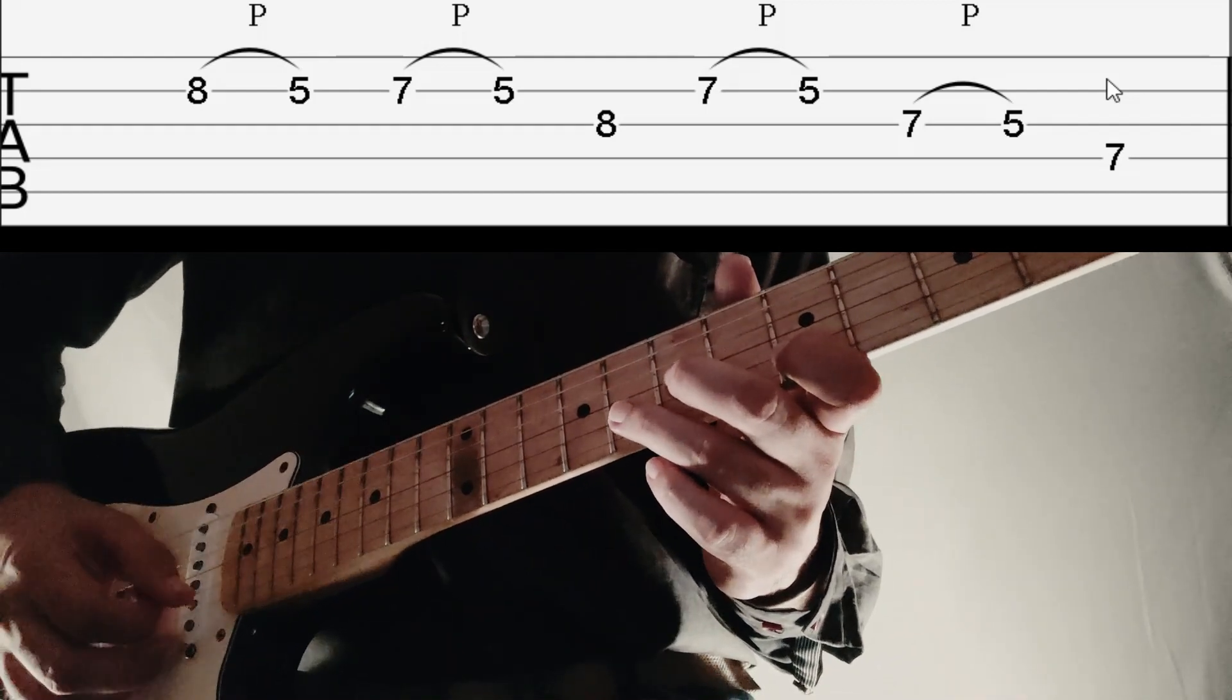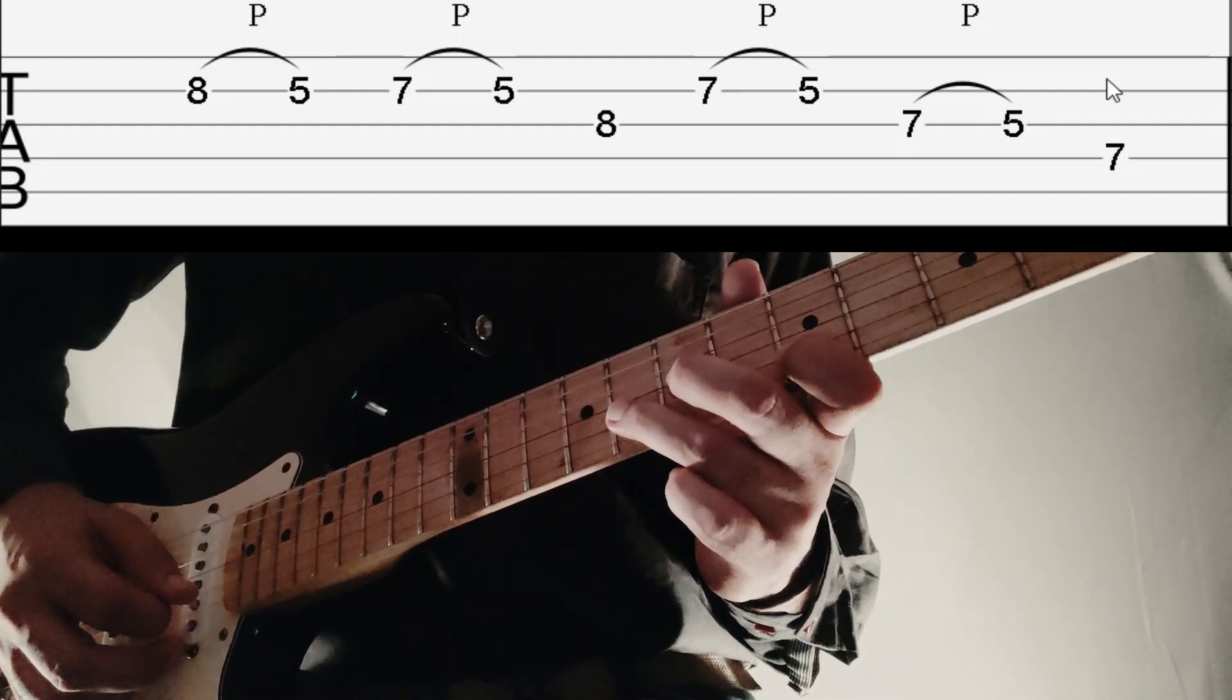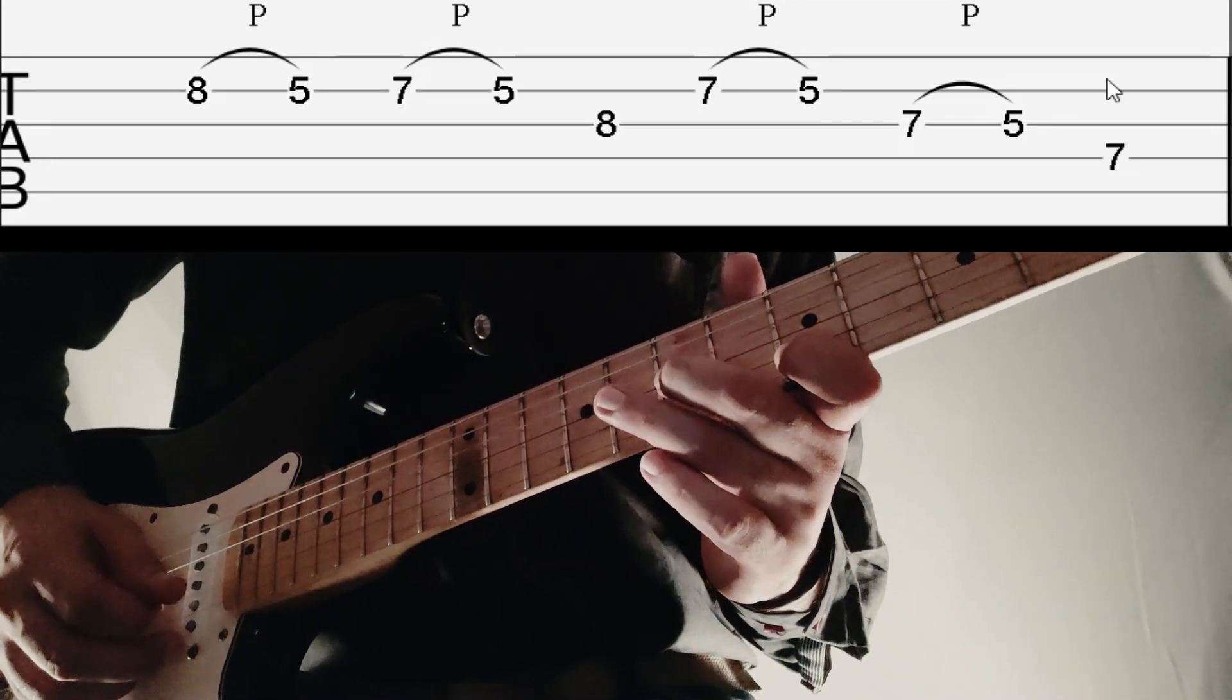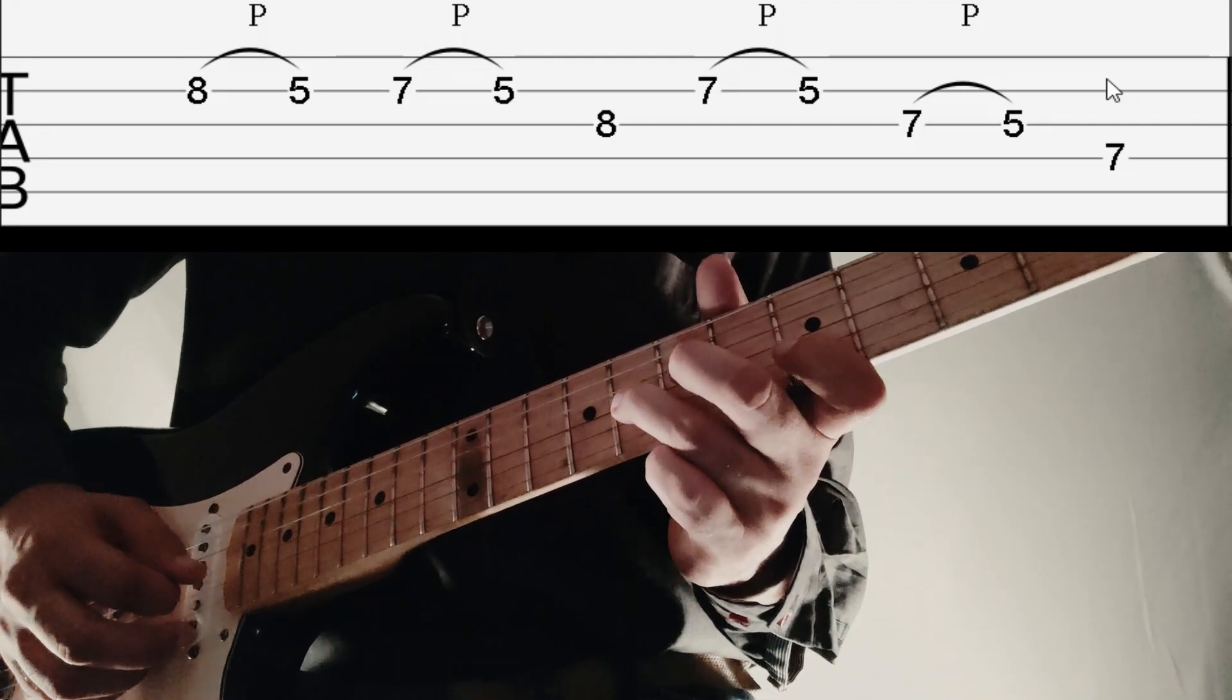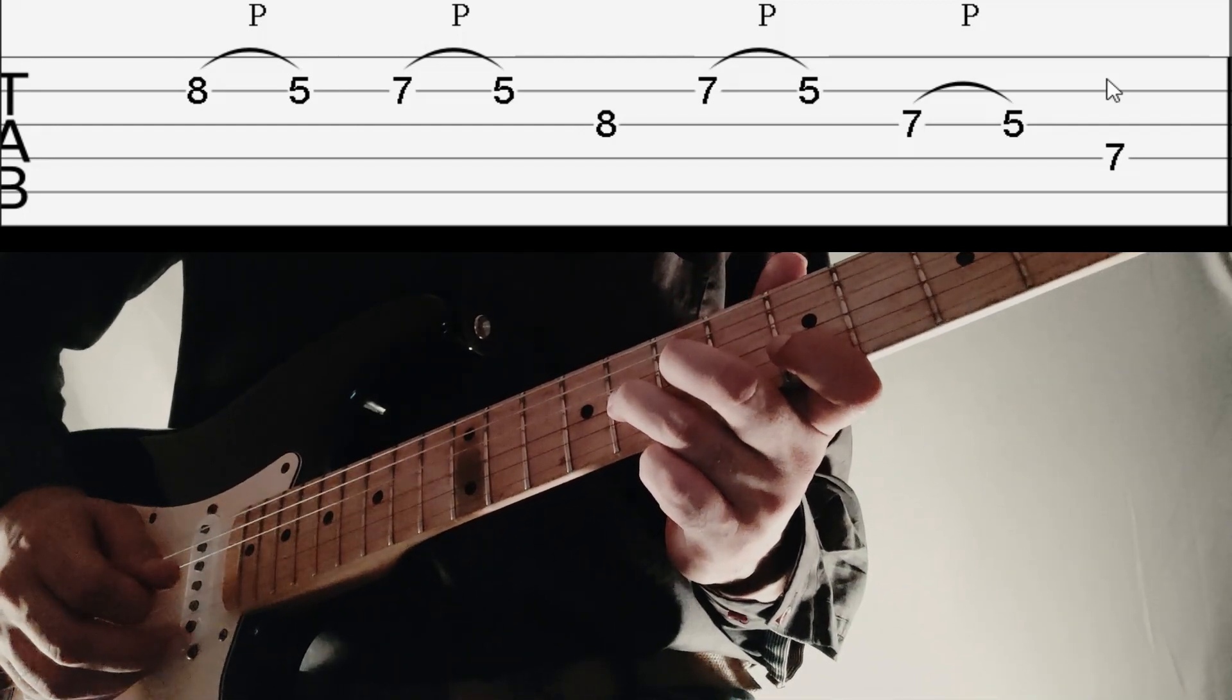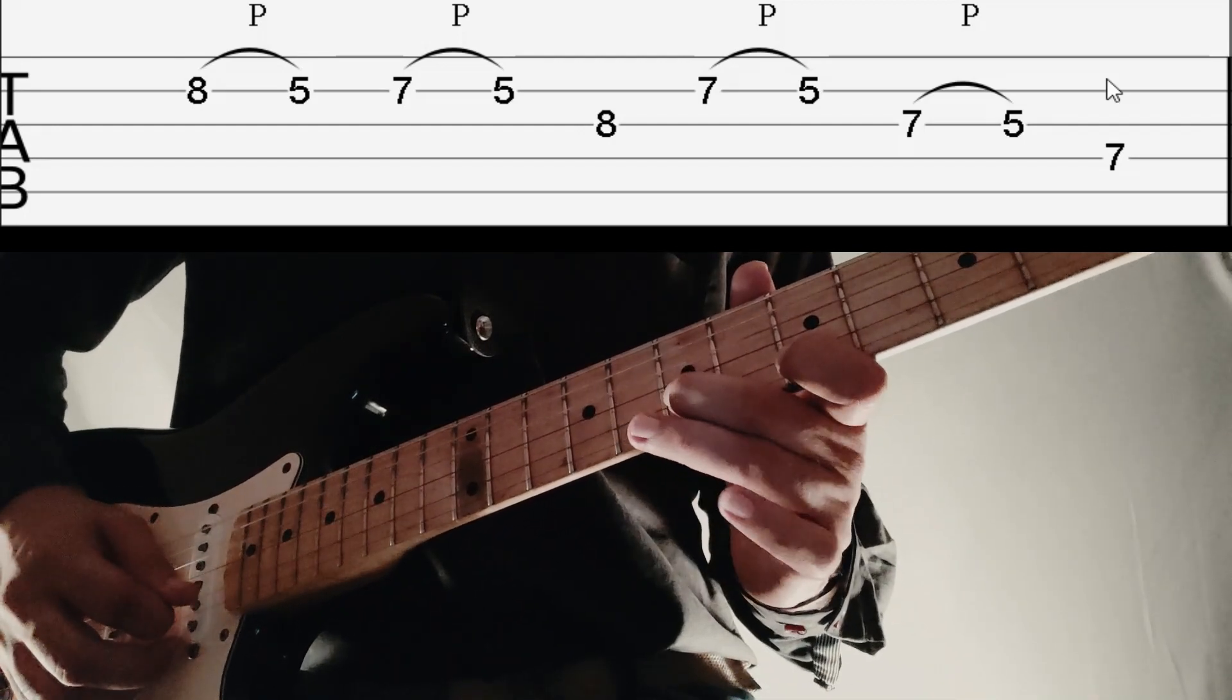We'll start with a pull off from 8 to 5 on 2nd string followed by 7 to 5 on the same string, then 8th fret on 3rd string followed by 7 to 5 pull off on B string.